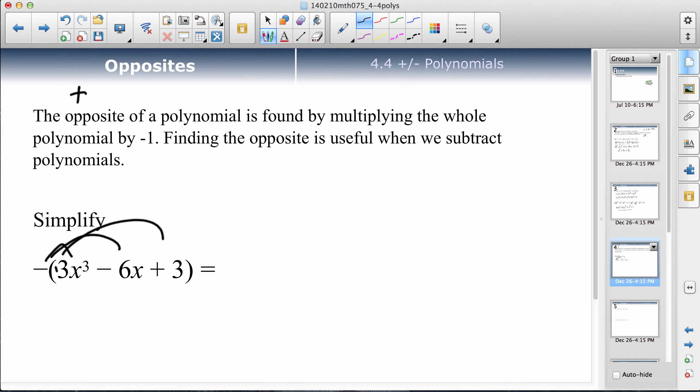The negative 6x will change to a positive 6x, and the positive 3 will change to a negative 3. So that's what it means by opposite. It's just whatever's in the brackets, you change its sign.